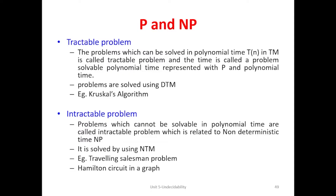If the non-computable algorithm requires a yes or no answer, then the problem is considered undecidable. There are four types of classifications available. One is a polynomial problem, which is a tractable one — a problem that can be solved in a particular time on a Turing machine. If we cannot solve a problem in a minimum amount of time, those problems are called non-polynomial or intractable problems, and they are solved with the help of a non-deterministic Turing machine.